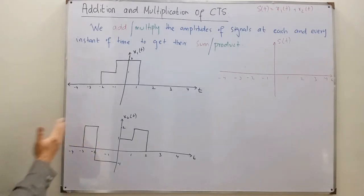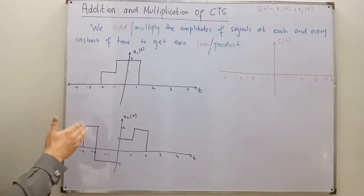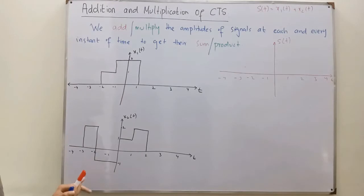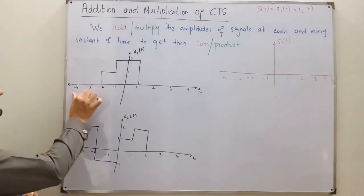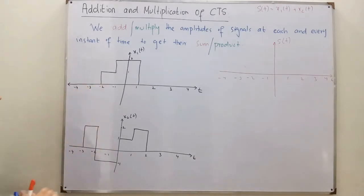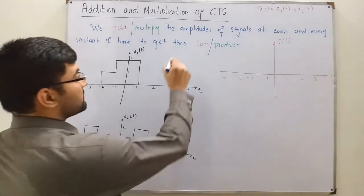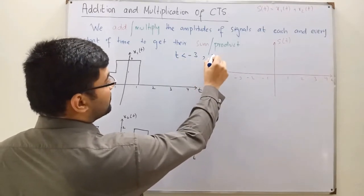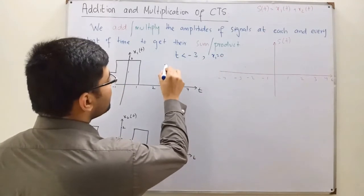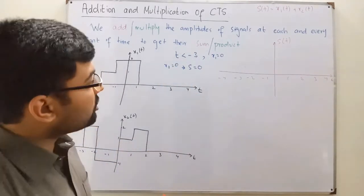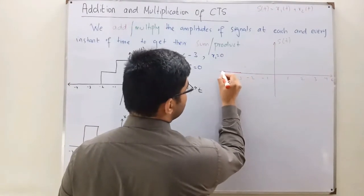Beyond negative 3 — when t is less than negative 3 — both signals are 0. x1 is 0 and x2 is 0, which implies the sum is 0. So below the negative 3 value, the sum is 0.